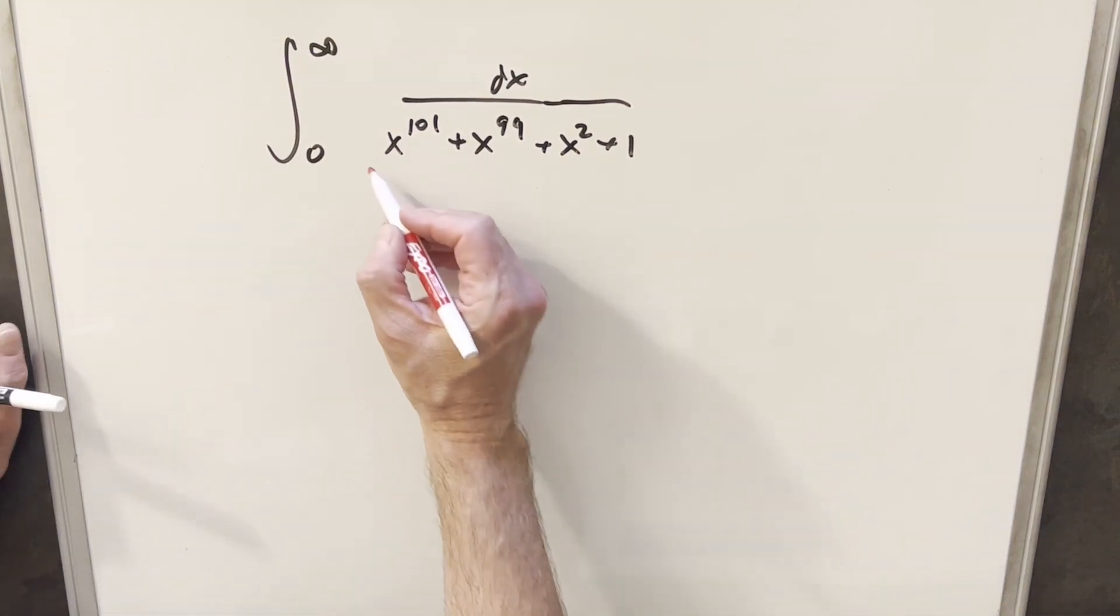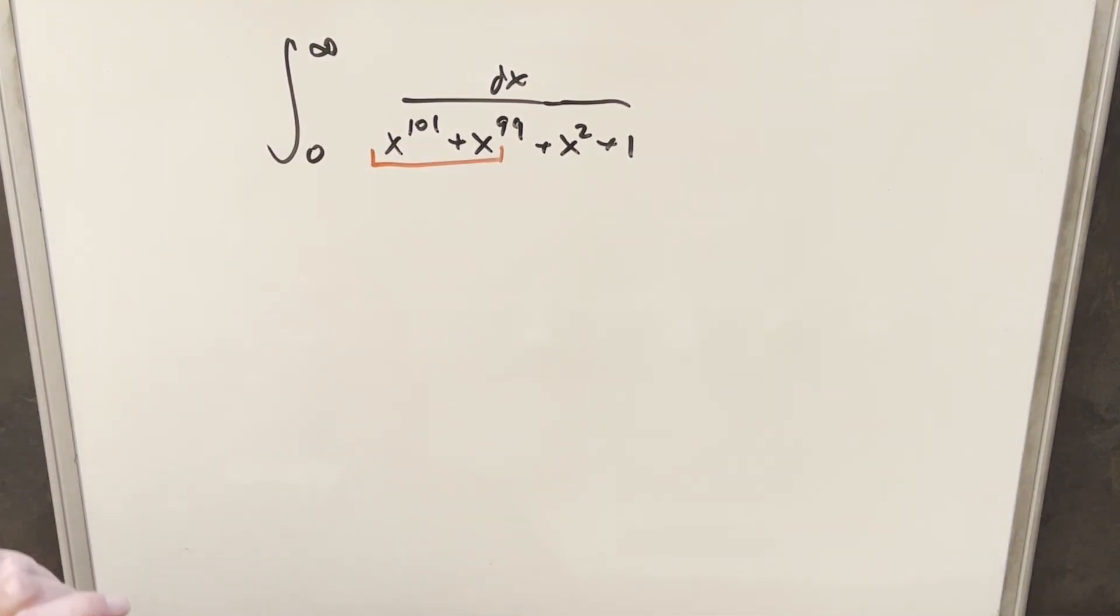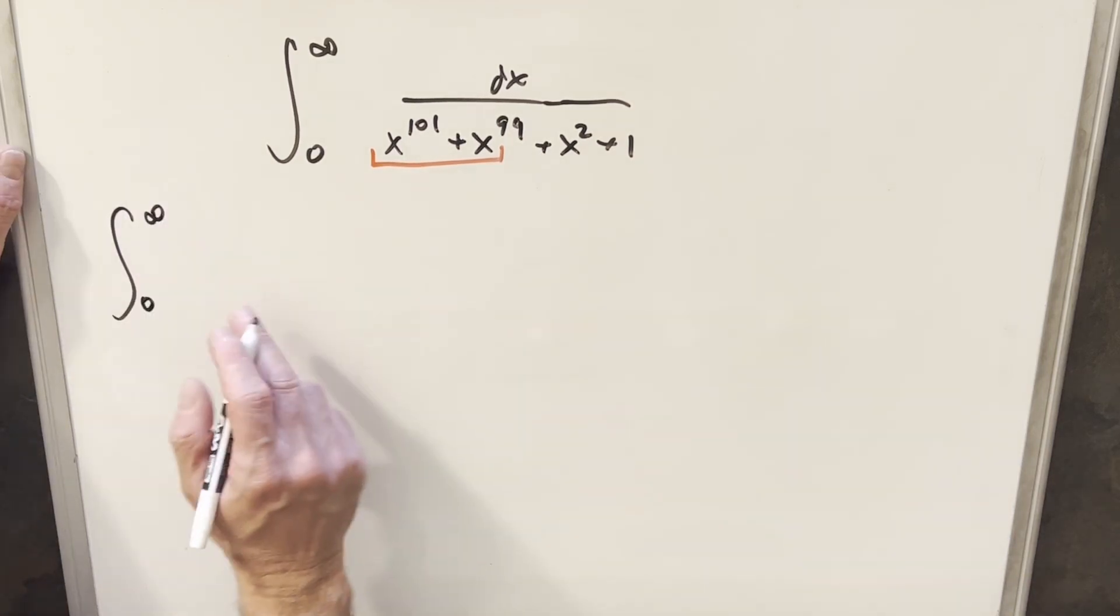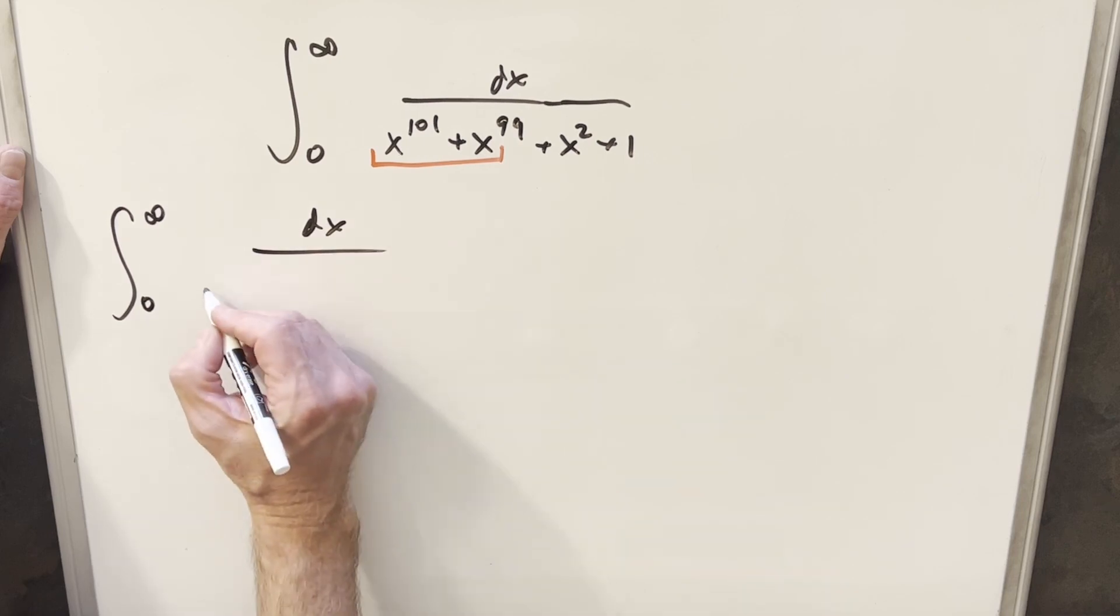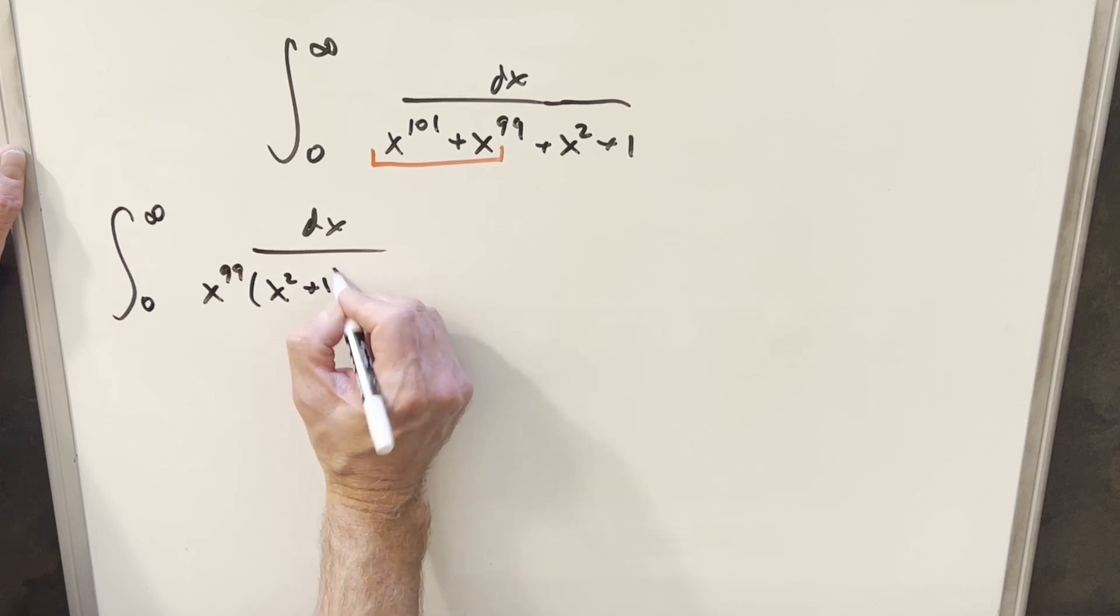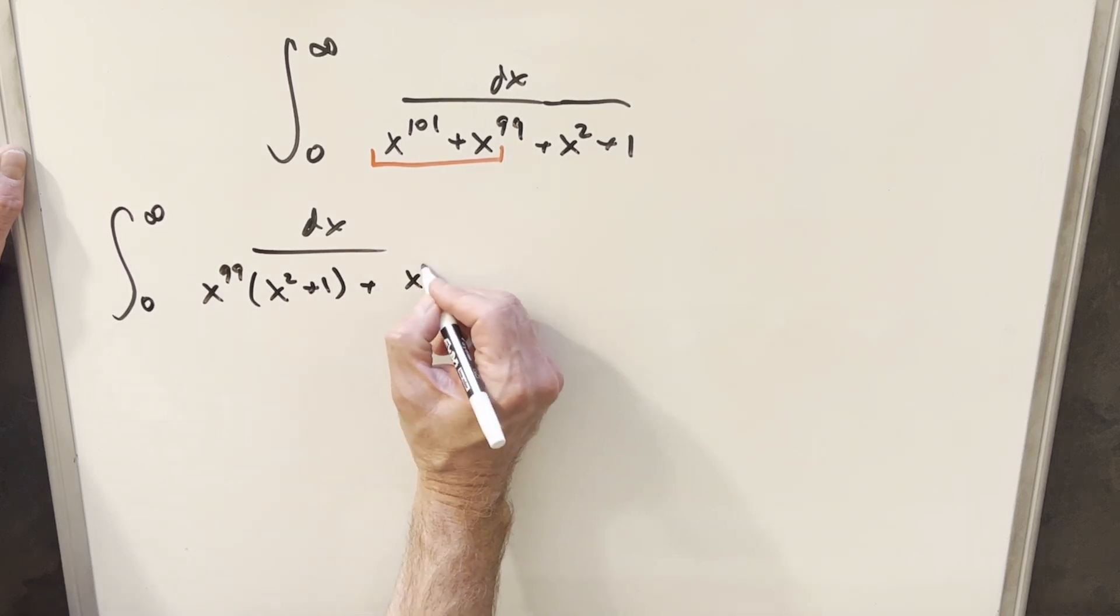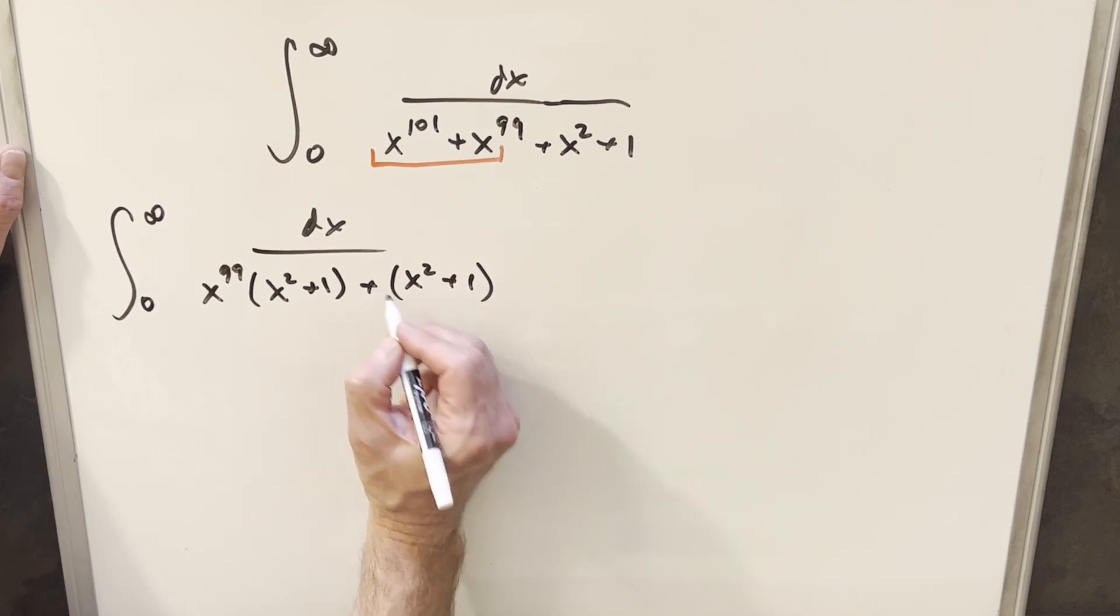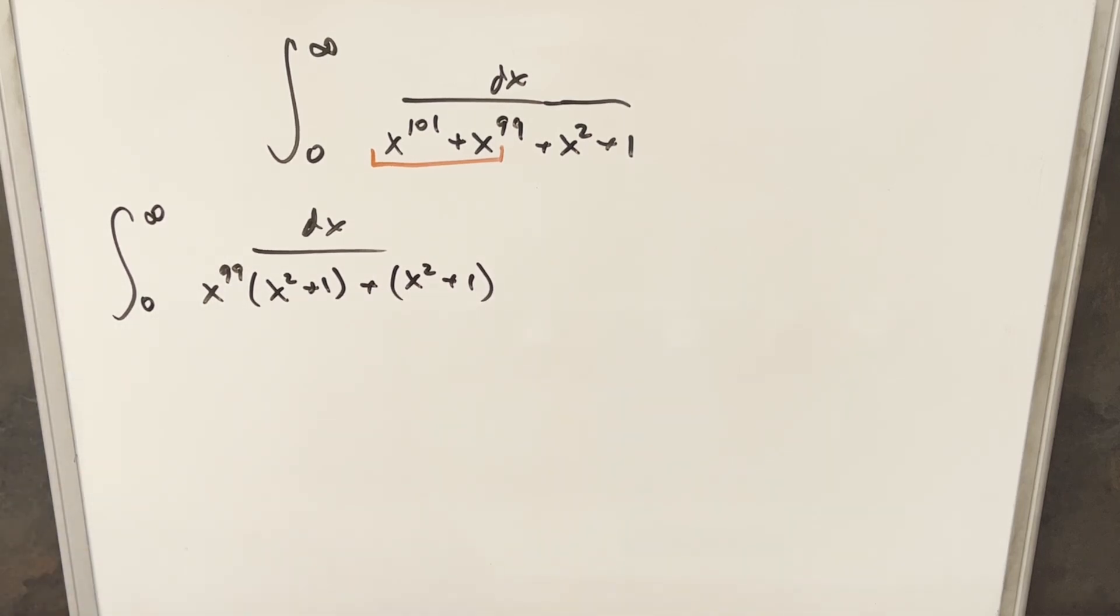The thing that jumps out first is it looks like we can do some factoring here. What I want to do to rewrite this, I'll factor an x to the 99 out. So if I factor out an x to the 99, we'll have inside here x squared plus 1, and that's nice because here we have another x squared plus 1.